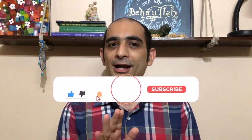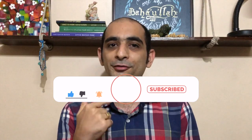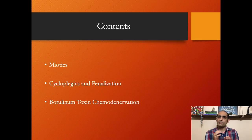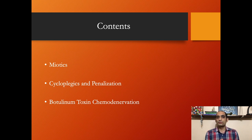Welcome back to another video. I would like to thank you for your unconditional support to the channel. Please do press the like button if you like the video and subscribe to not miss any of our future videos that we post every week. Today I will share with you about some of the pharmacological agents used in various therapies in orthoptics. We will look at miotics, cycloplegics, the process of penalization, and the use of botulinum toxin chemodenervation.